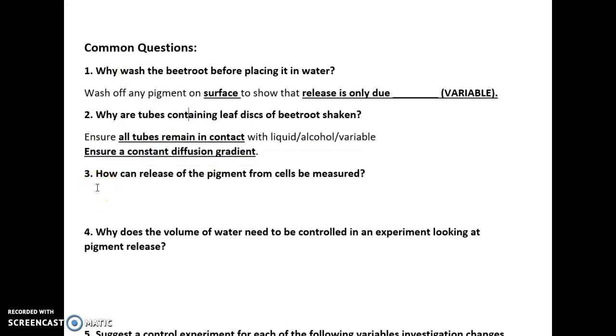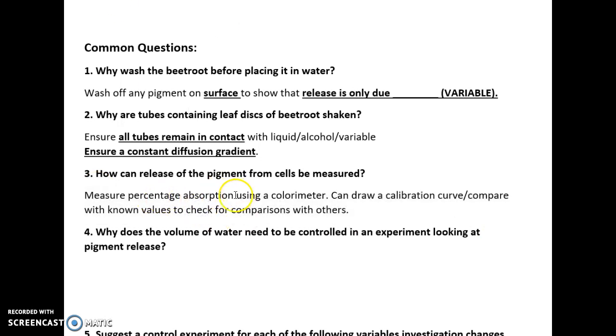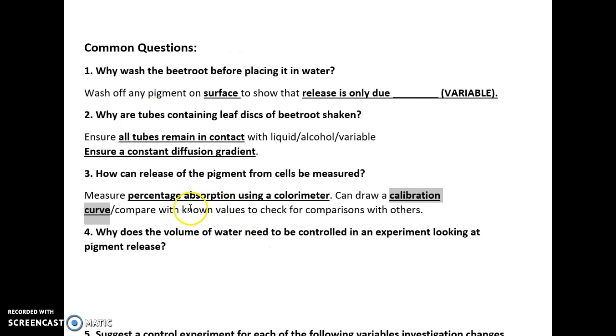How can the release of pigment from cells be measured? This is simply using colorimetry—measuring the percentage absorbance using colorimetry. Then a calibration curve can be drawn and compared with known values to check for comparisons with others.